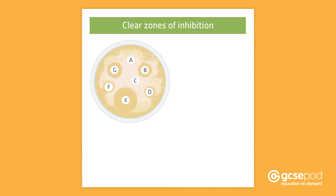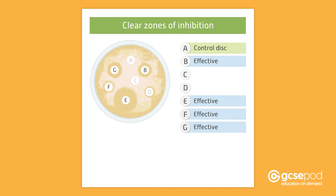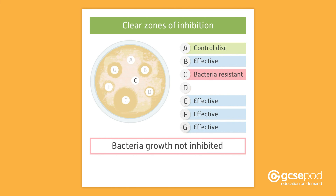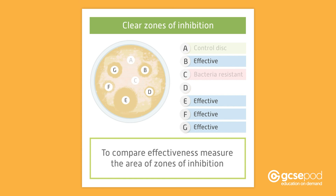After incubation, you will see clear zones of inhibition around some of the antibiotic discs. In this example, A was the control disc. B, E, F, and G were effective antibiotics, as the agar around them remains clear, meaning that the growth of bacteria has been inhibited or prevented by the antibiotic. The bacteria was resistant to antibiotic C, which can be seen as bacterial growth has not been inhibited.